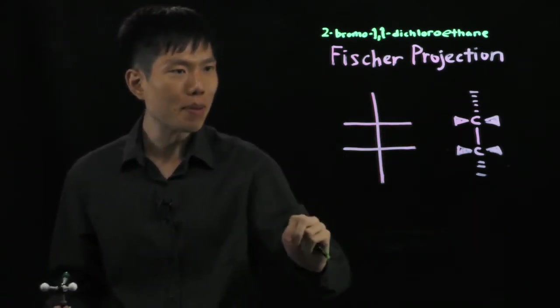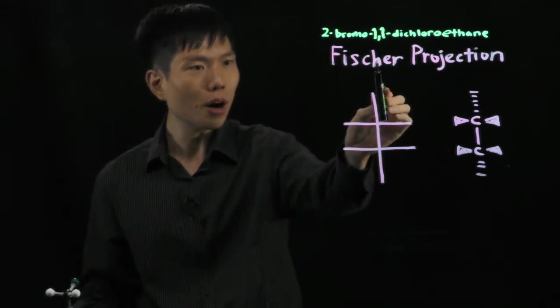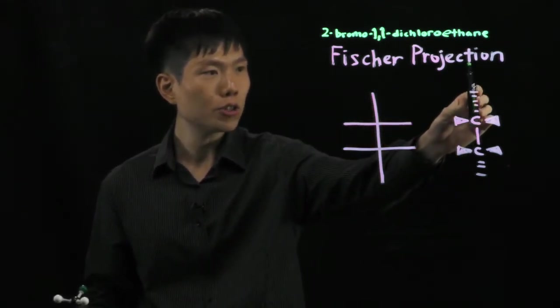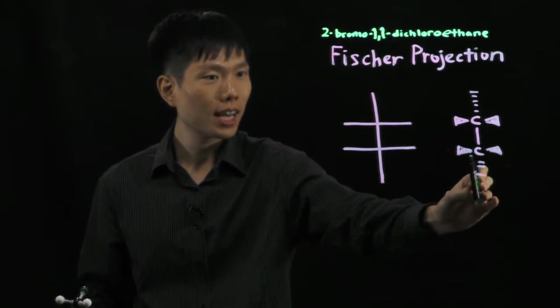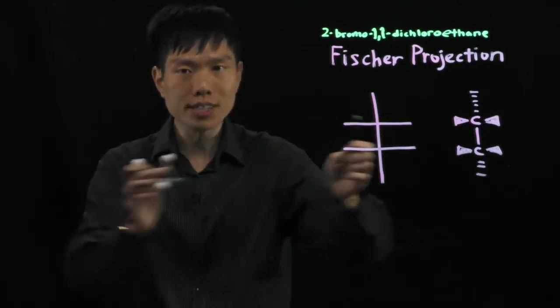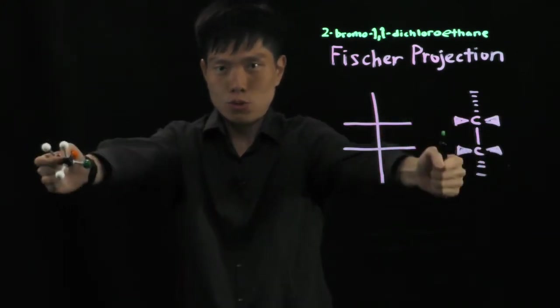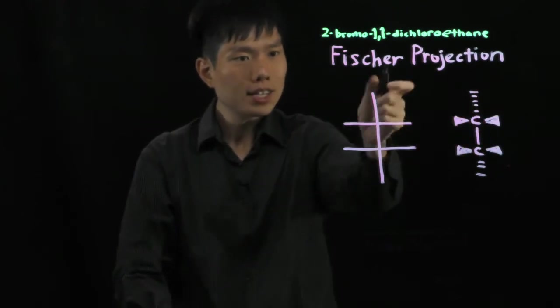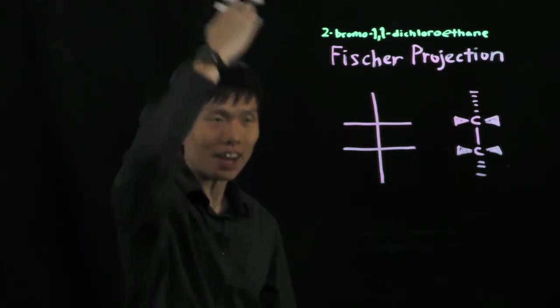This translates to that diagram in which the vertical bonds at the end go to the back away from you. And the horizontal bonds are pointing to you like this, to you. Whereas the back ones here, that means it's to the back behind.